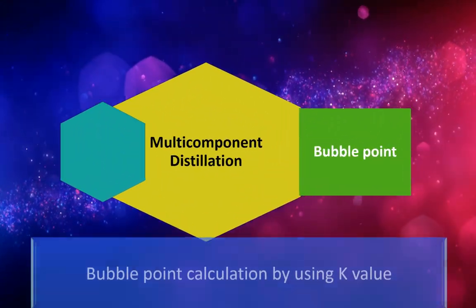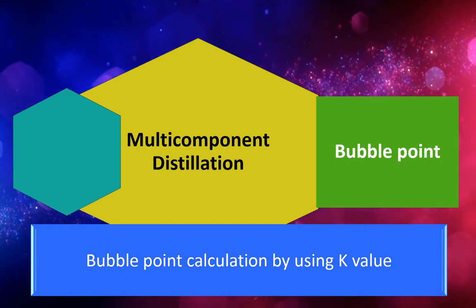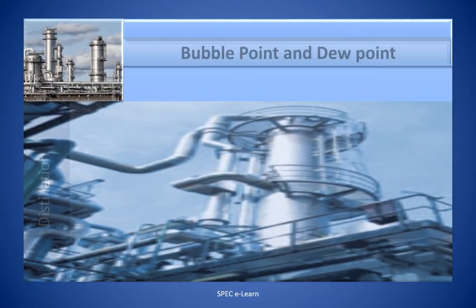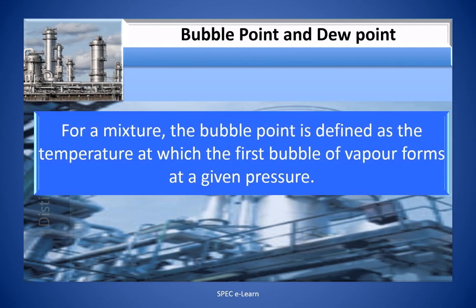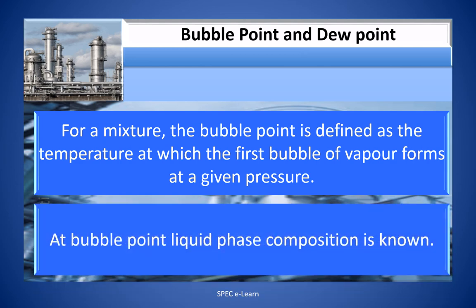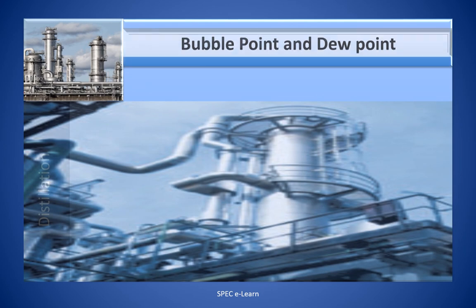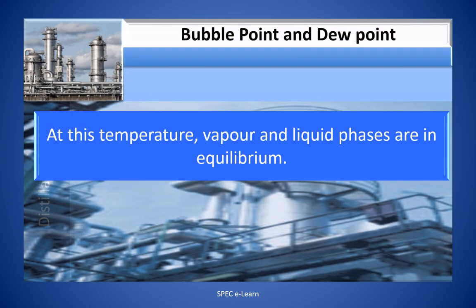Bubble Point: Bubble point calculation using K values. For a mixture, the bubble point is defined as the temperature at which the first bubble of vapor forms at a given pressure. At bubble point, the liquid phase composition is known. At this temperature, the vapor and liquid phases are in equilibrium.